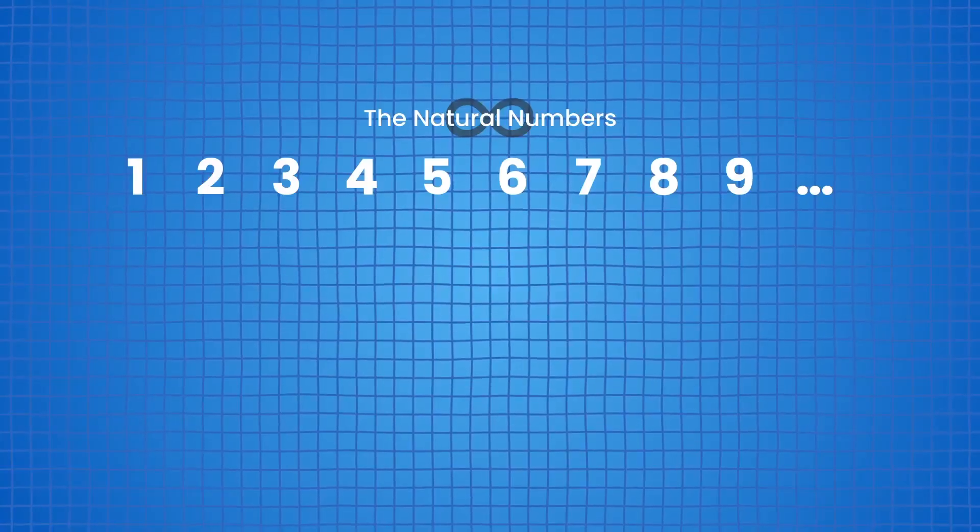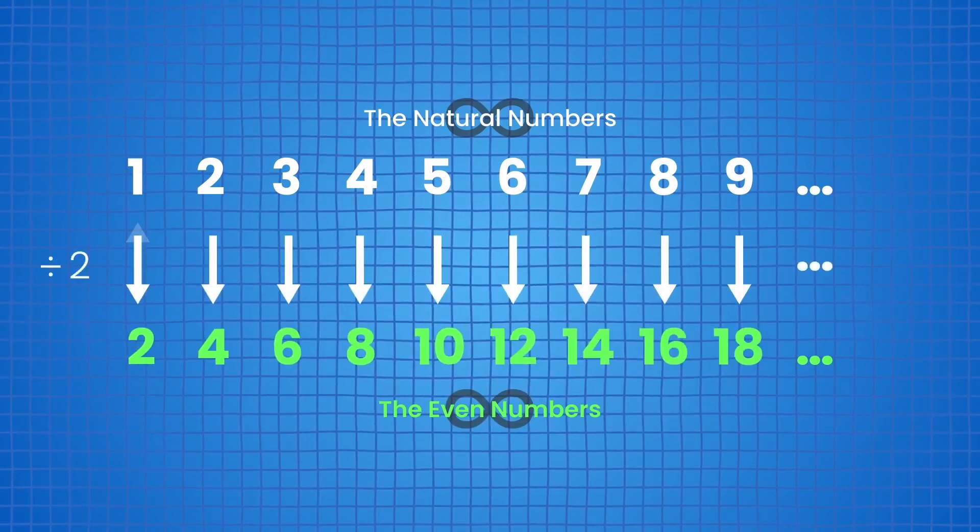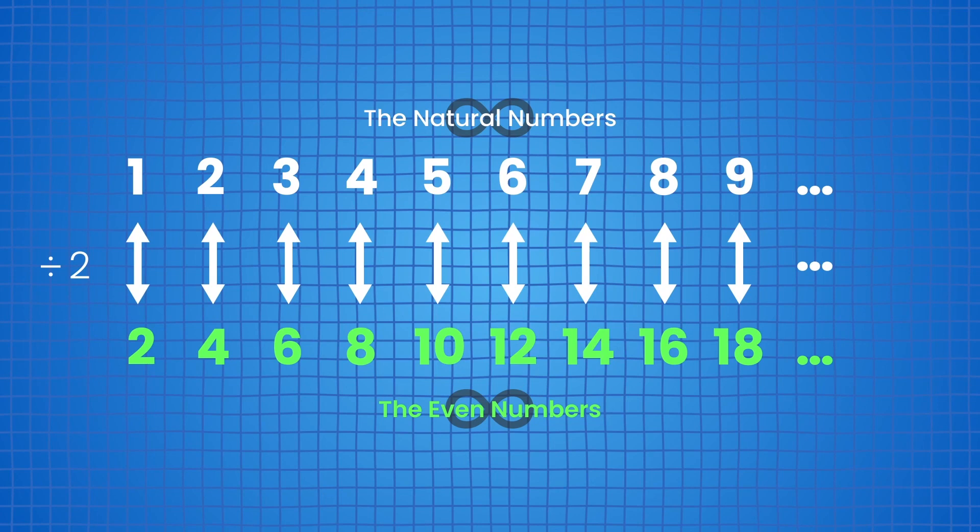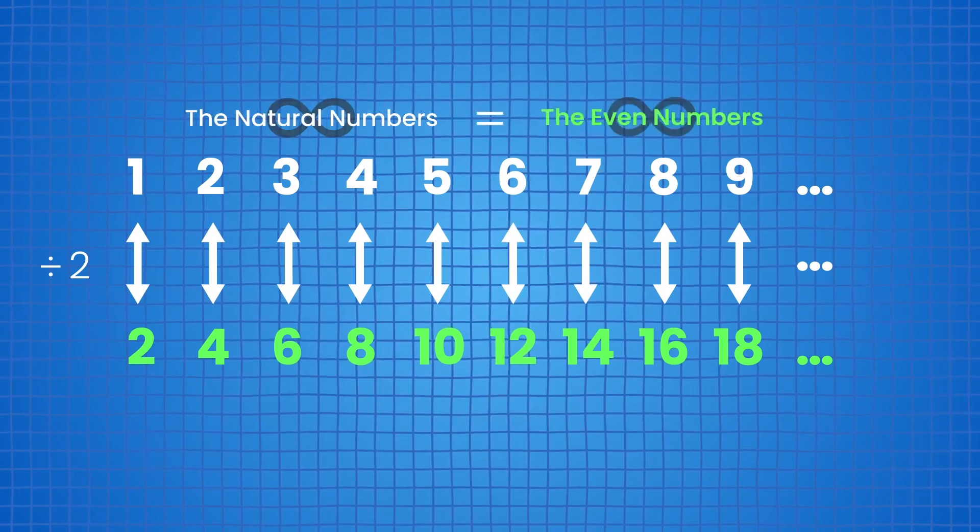Let's use this to compare infinities. Intuitively, the set of just even numbers should be half the size of the naturals, but they're actually the same size. We can uniquely pair each natural to its double, and each even to its half. Since there's a unique pairing between the two infinite sets, these infinities must be the same size.